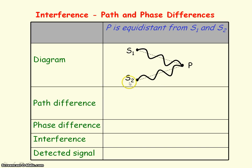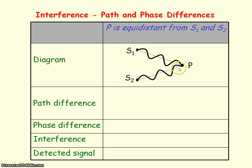This diagram shows two sources of waves S1 and S2, producing identical waves — that is, waves of the same type, frequency, and wavelength. The waves are being detected at point P. If we consider the case where P is equidistant from S1 and S2, then the path difference of the waves will be zero, as both waves have travelled the same distance to get to P.